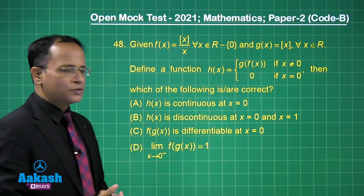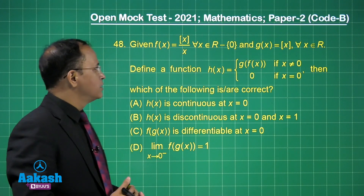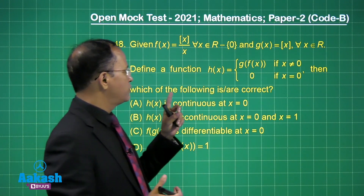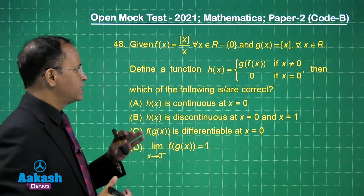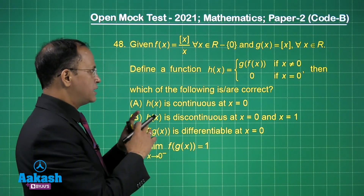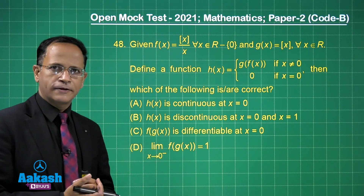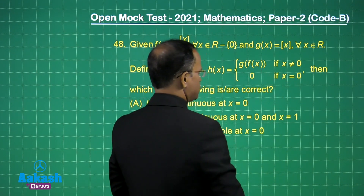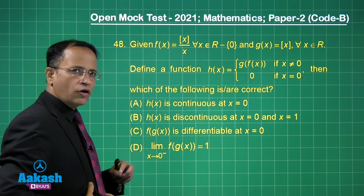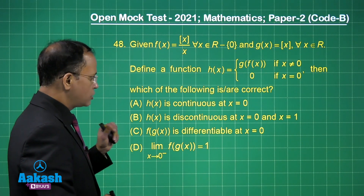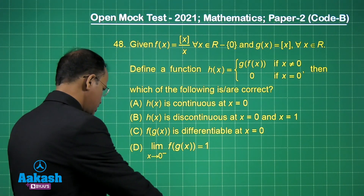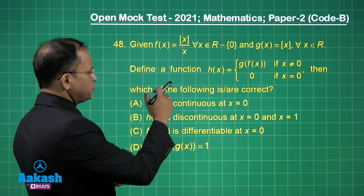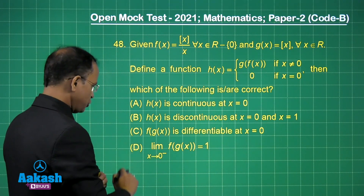Now let us discuss question 48. f(x) is the greatest integer function of x/|x| for x belonging to ℝ minus {0}, and g(x) is the greatest integer function of x for all x in ℝ. We need to define h(x) as g(f(x)) when x ≠ 0, and 0 when x = 0. The key component is the composition of functions — finding g(f(x)).